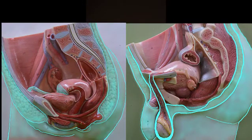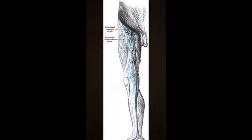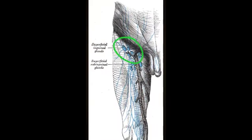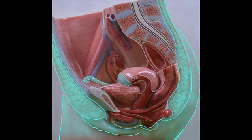Lymph from somatic areas of the perineum, such as the inferior one-third of the anal canal and superficial fascia inferior to the umbilicus, first follows a superficial route to the superficial inguinal lymph nodes. This is important to realize because these nodes are palpable, and their enlargement may be an indication of cancer in any of the organs they drain.